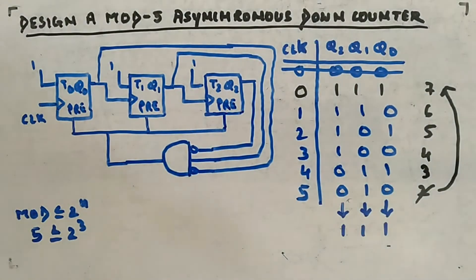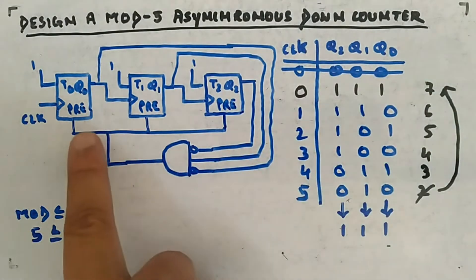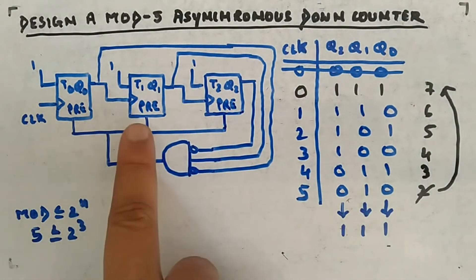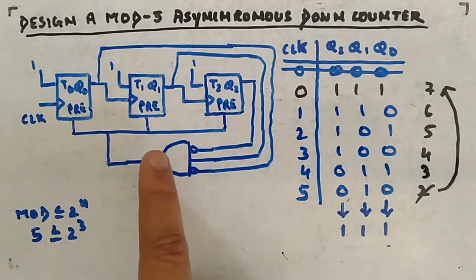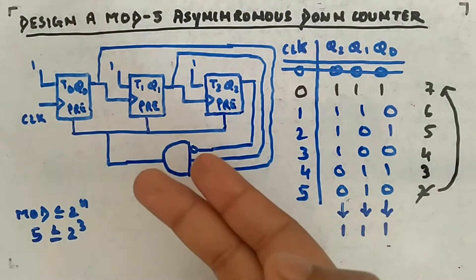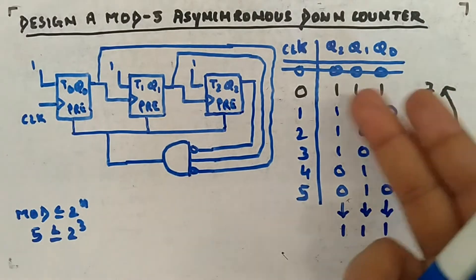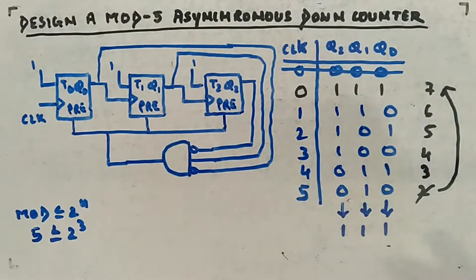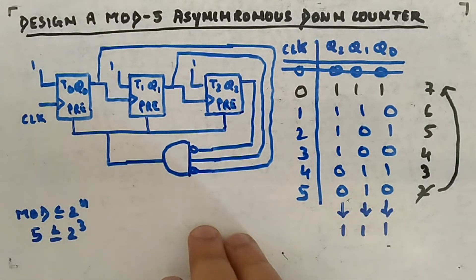Initial state will be 1,1,1 because you are using preset. Imagine if your initial state had been 0,0,0 — you would not be able to use preset, because preset makes outputs 1,1,1. In that case you would have to use clear only. This example is just to show how preset can be used as an asynchronous input in counters. Always remember: initial state is 1,1,1 when using preset. This is your mod-5 asynchronous down counter.